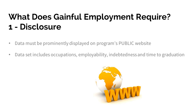The Gainful Employment Regulations require institutions to annually disclose and report on any Gainful Employment Programs that they offer. Disclosure means that institutions must prominently display information about occupations that programs are likely to lead to, as well as annual completion and progression rates and student indebtedness. These data must be disclosed on the program's public website.